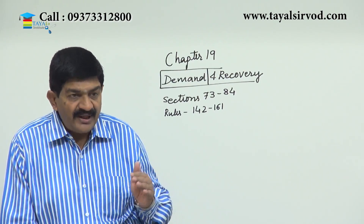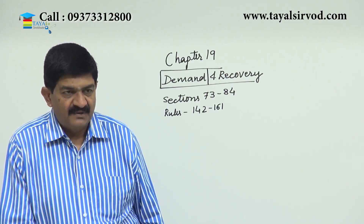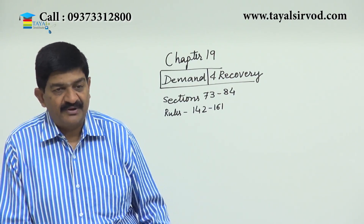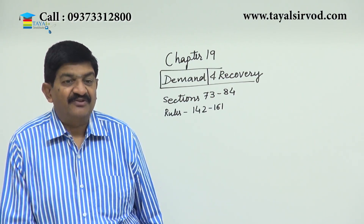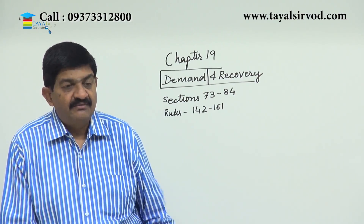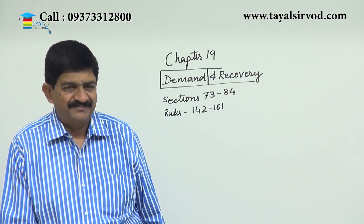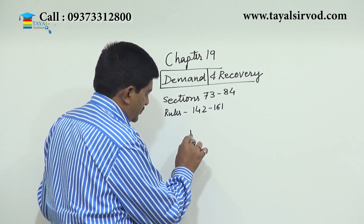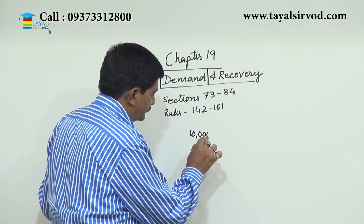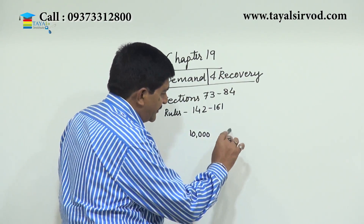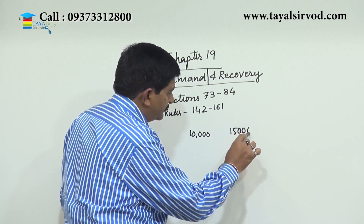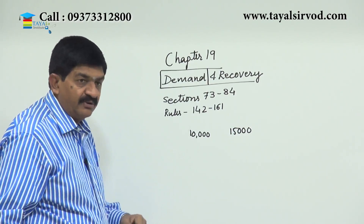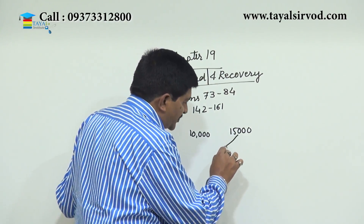Now, only availing credit itself is not as such a serious offense, but utilizing the wrongly availed credit for paying tax to the government — that is wrong. Because in that case we are paying tax to the government out of government money. So where the credit eligible is, say, 10,000 rupees, but the person has availed credit of 15,000.